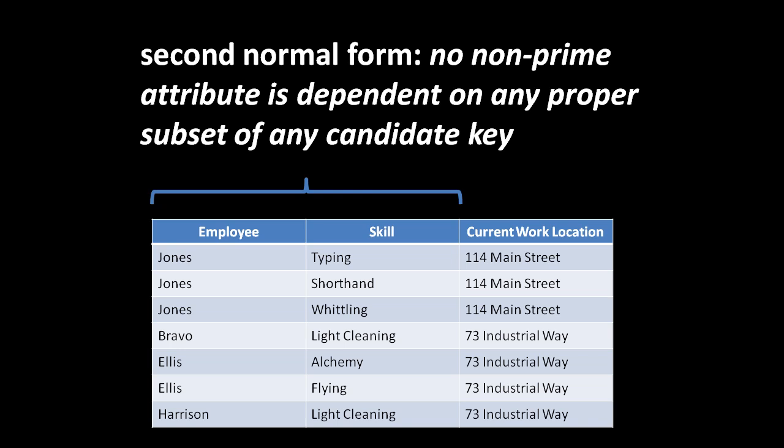A candidate key is simply a set of columns that would validly be selected as the primary key for the table. A proper subset is a subset not equal to the whole set, so the proper subsets of the candidate key 'employee and skill' are the employee column by itself and the skill column by itself. A prime attribute is a column which is part of a candidate key, so 'current work location' is a non-prime attribute because it doesn't belong to any candidate key.